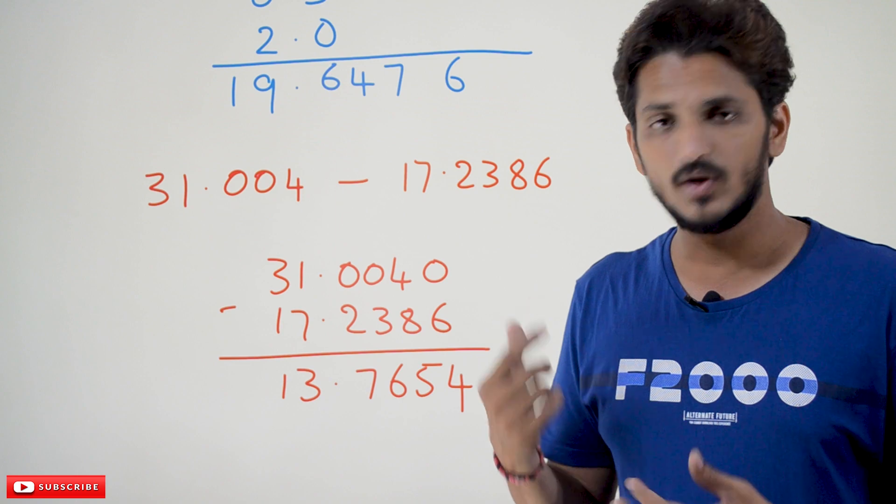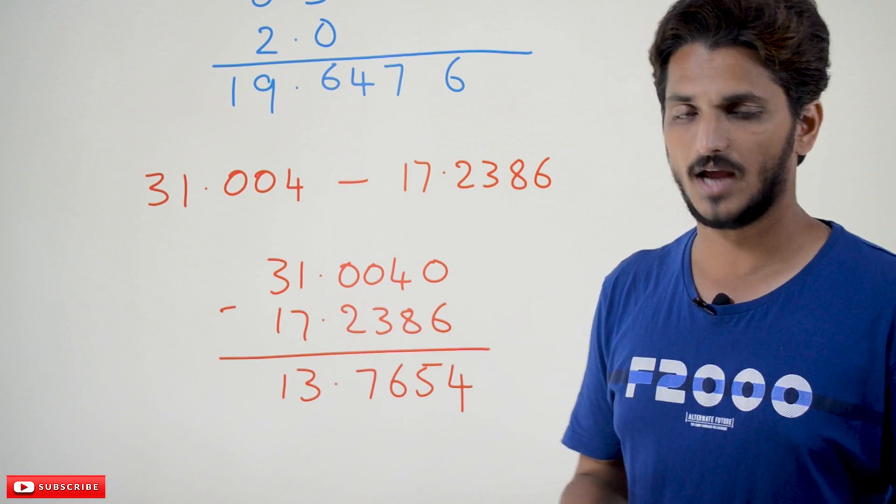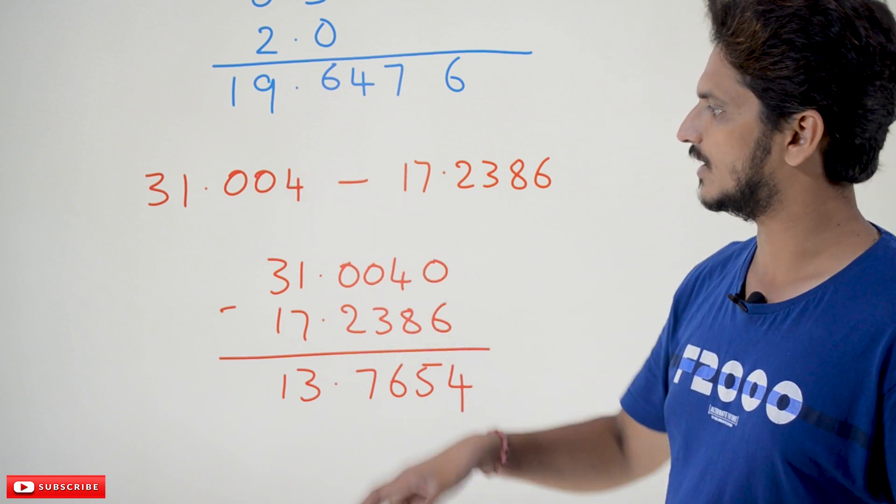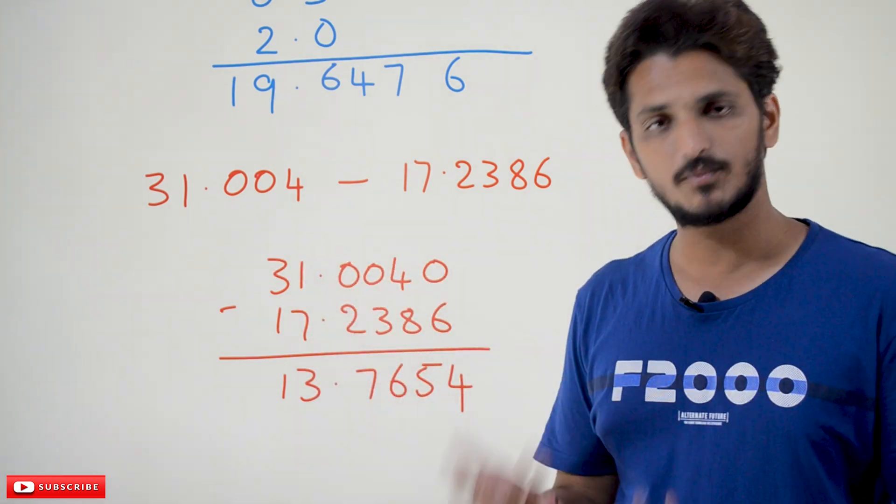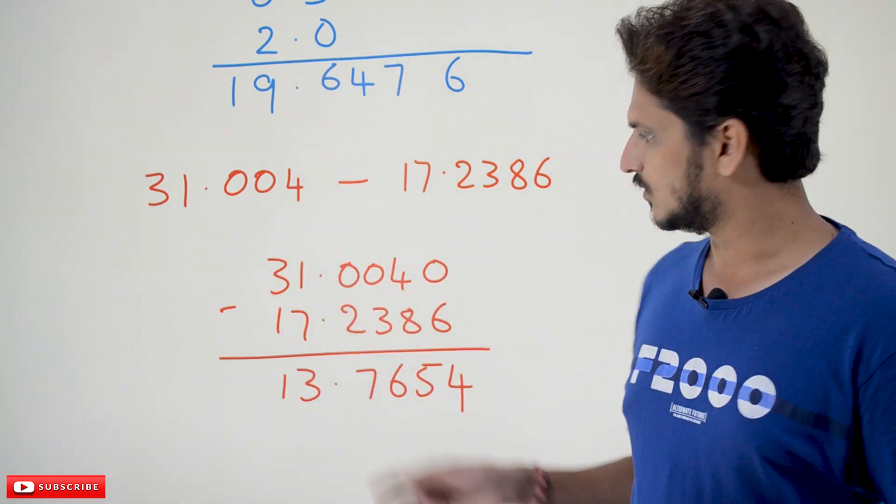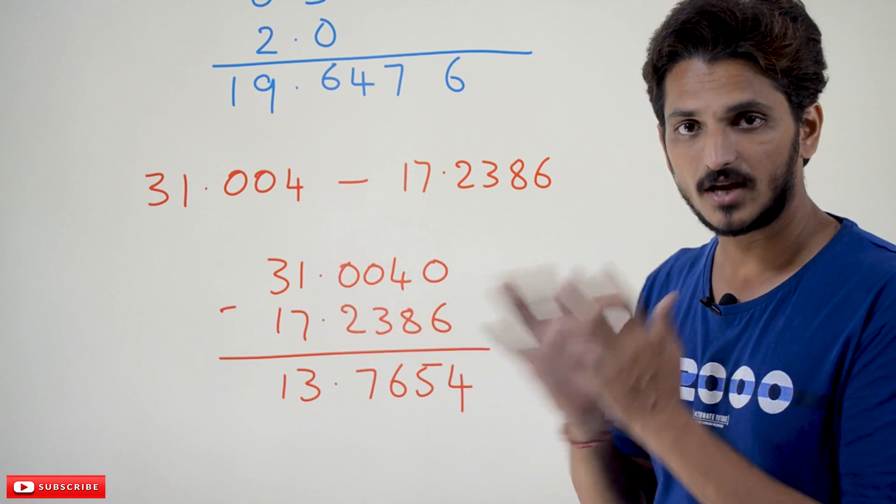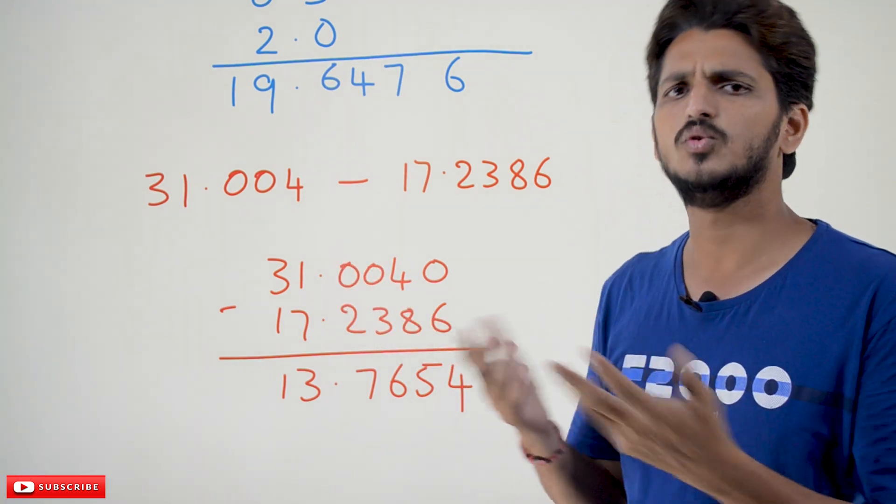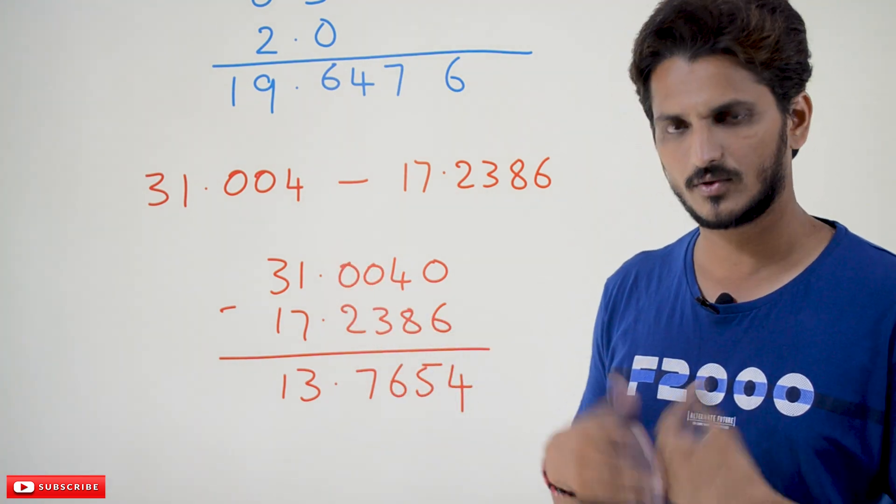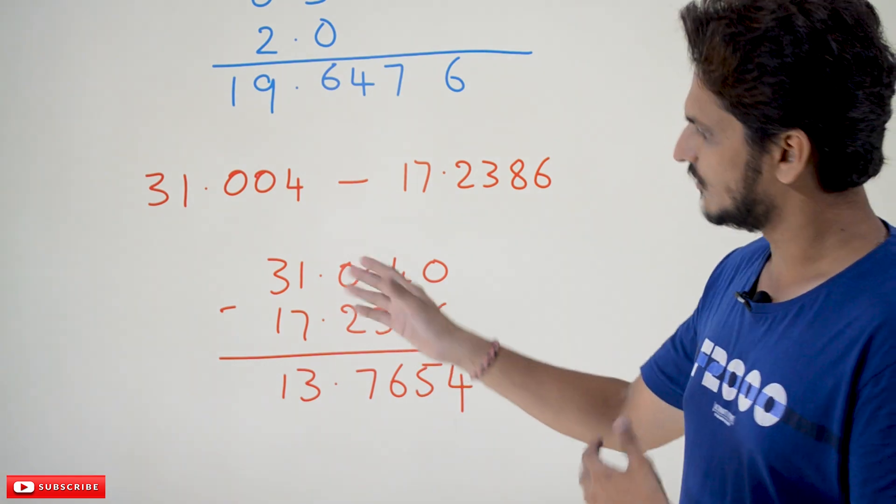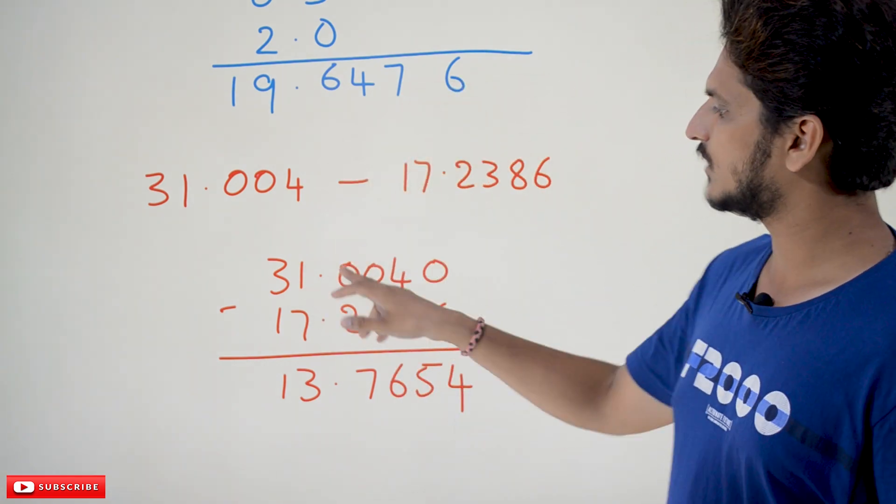So we can add 0 after the number. The same concept follows here - the dot should be in a straight line. Make it a straight line and do normal subtraction, whatever way we do normal subtraction. Forget about the dot and do the subtraction.